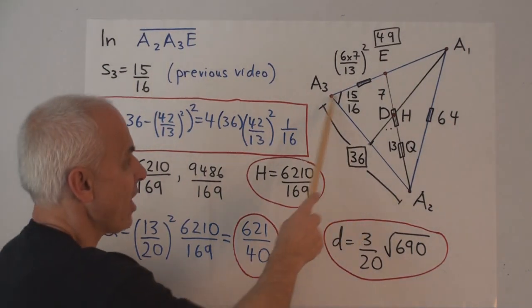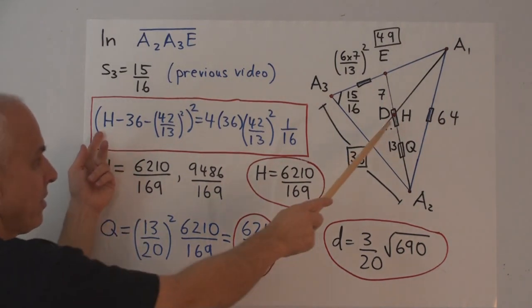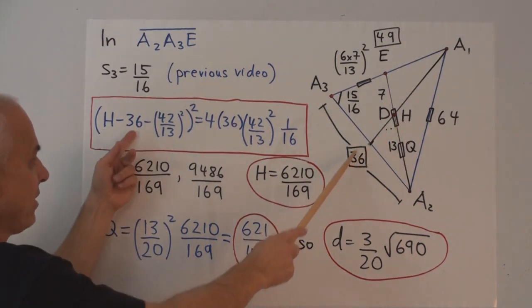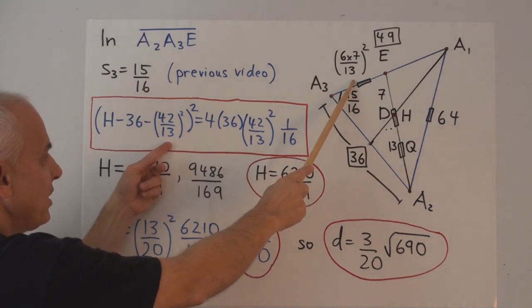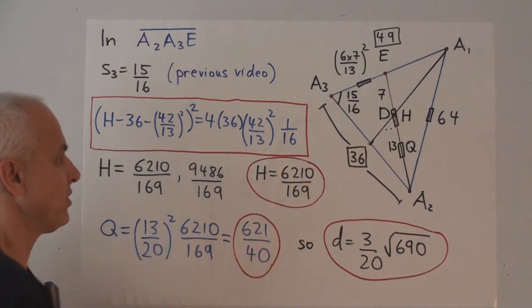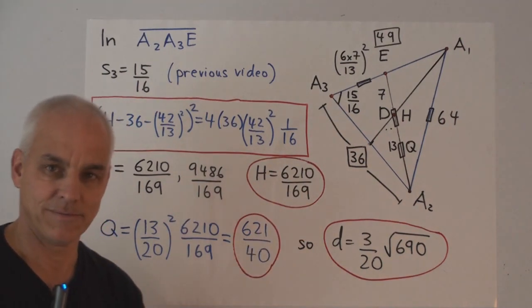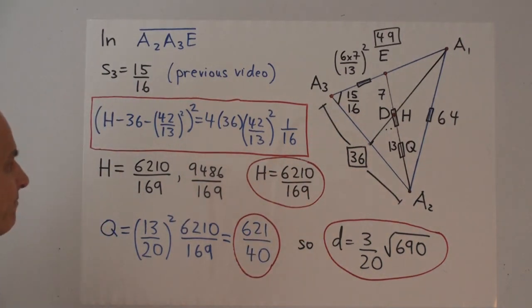So, here now is the cross law in this triangle. H minus 36 minus this 42 over 13² all squared is 4 times 36 times 42 over 13² times 1 minus this spread, which is 1/16. That's a quadratic equation in H, which you can solve, and here are its two solutions.